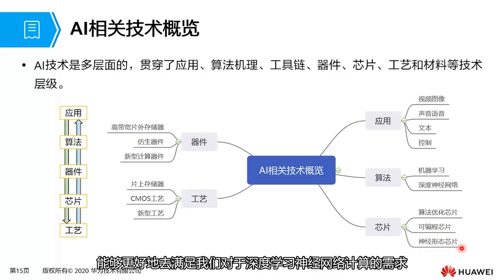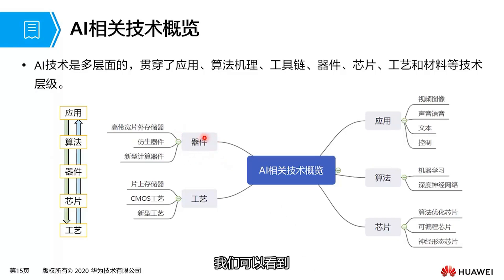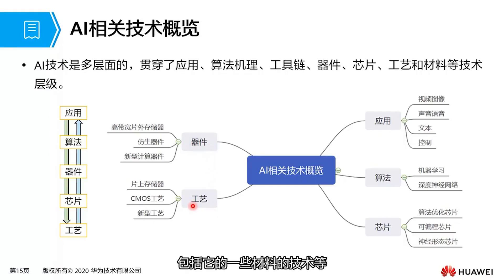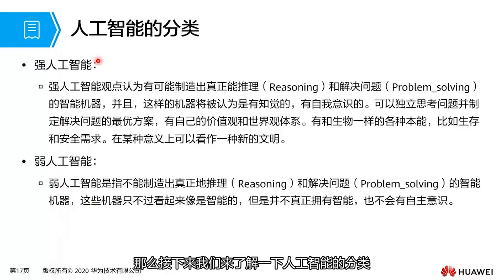Subsequently, the hardware development trend is to manufacture neuromorphic chips that can better meet our computational needs for deep learning neural networks. On the left side of our map, we can see that besides manufacturing chips, we also need to consider related equipment, production processes, and technical aspects of materials — all of which are technical aspects related to artificial intelligence that need to be taken into account.